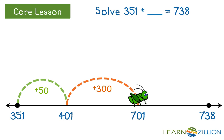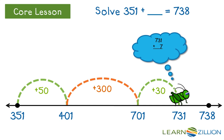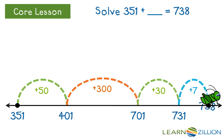I have to be careful not to go over. 701 plus 30 equals 731. And now I only have a few hops left. 731 plus 7 equals 738. I found the answer.